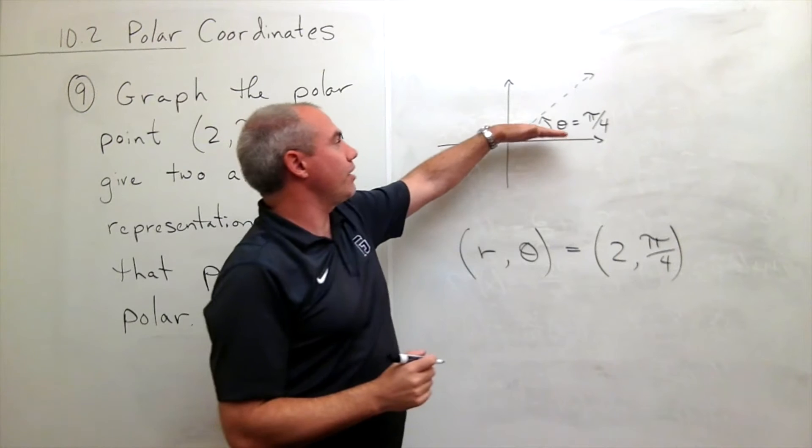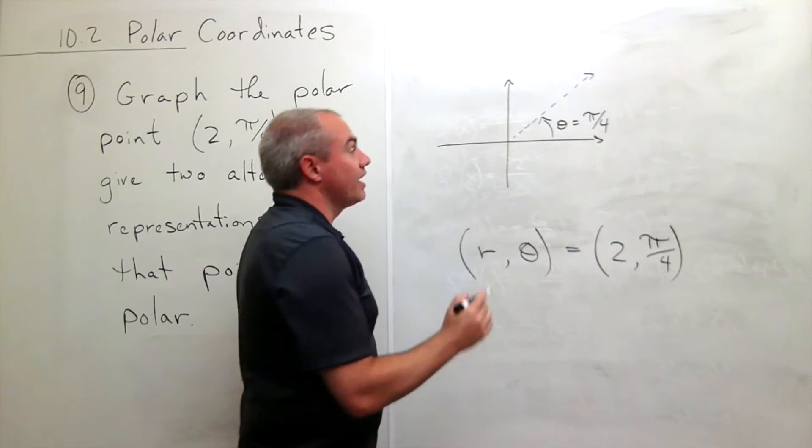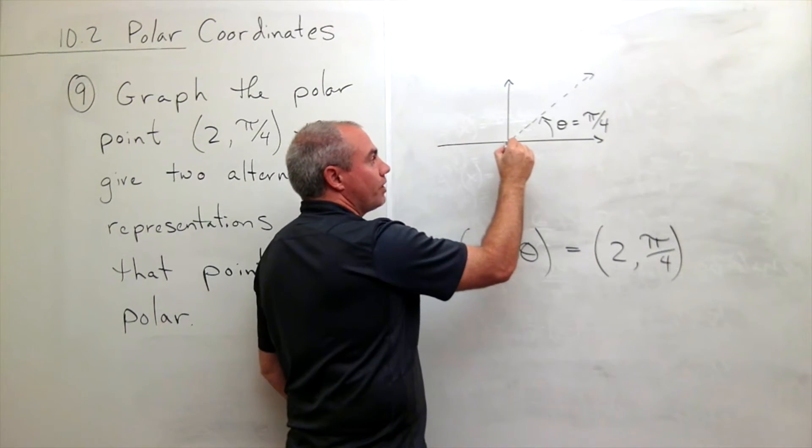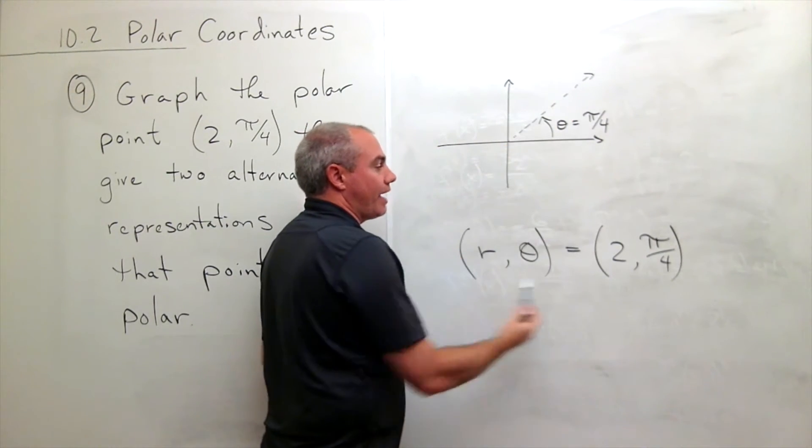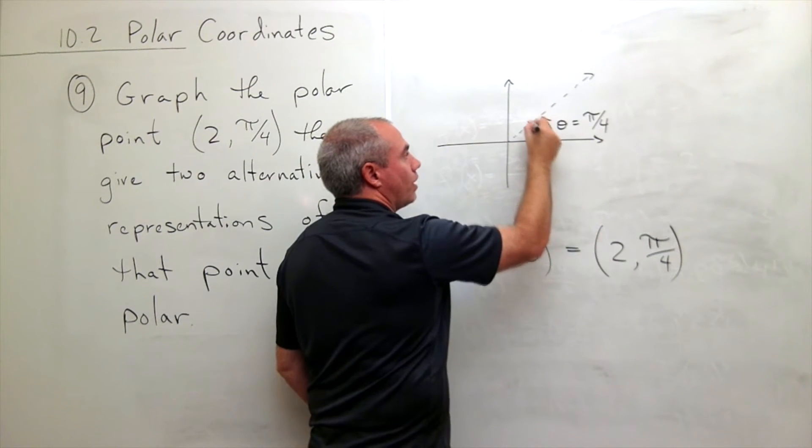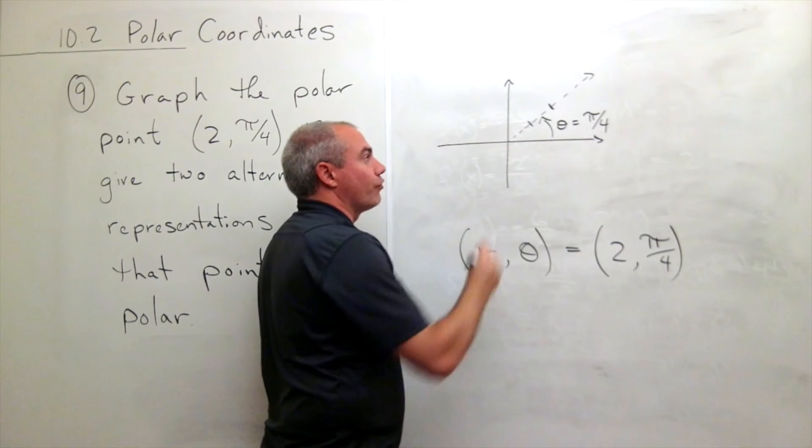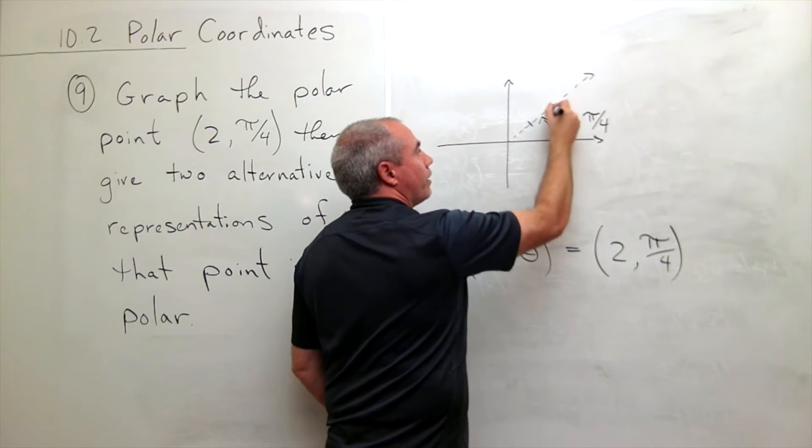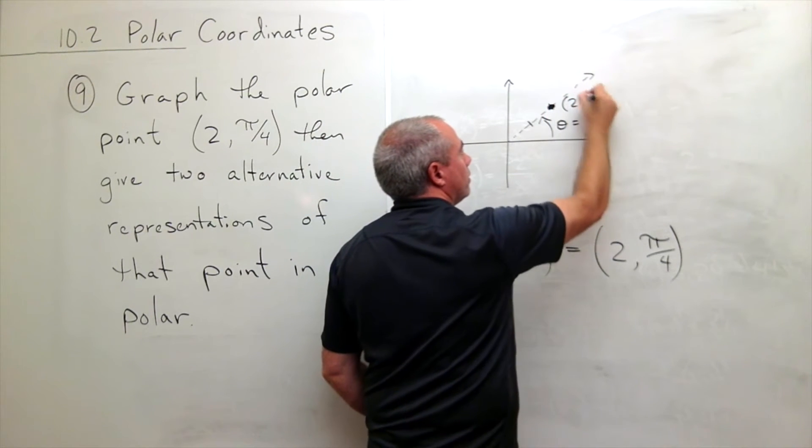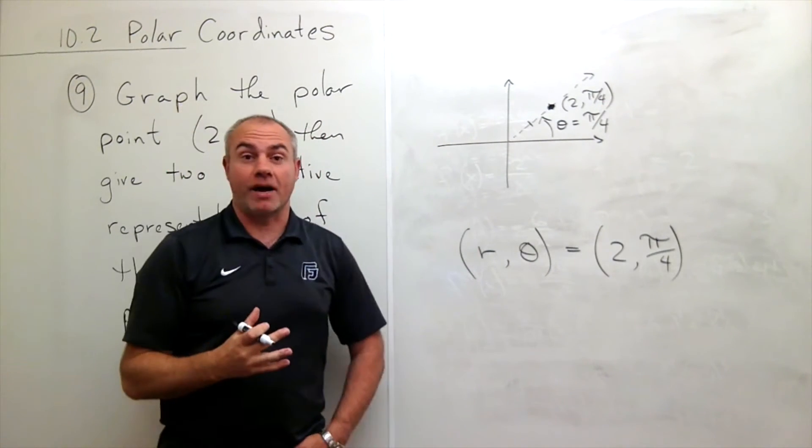So I go up an angle of π/4 off of the positive x-axis, and then now that I know what my angle is, move from the origin out on that angle positive 2 units. So I go out—here's 1 unit, here's 2 units on that ray—and now I put my point down. So this point is (2, π/4). We're able to graph that point.